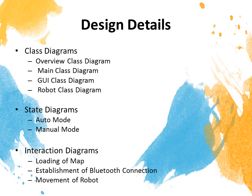For class diagrams, there are overview class diagrams, which is the class diagram of the whole system. There will also be main class diagrams, which contains the main class where the program starts off. The GUI class diagram contains all the component classes of the UI. And the robot class diagram will contain the controller class to the robot, and it will also call the leJOS API. For state diagrams, there are states in auto mode and manual mode. And lastly, interaction diagrams, which has loading of map, establishing of Bluetooth connection, and the movement of robot.